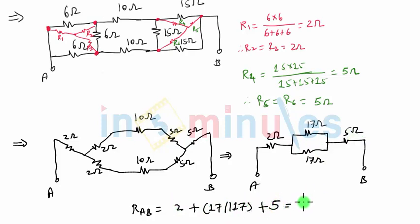This will be nothing but 5 plus 2 is 7 plus when two resistors are of equal value parallel combination will result in the value which is half. So 17 by 2 which will be nothing but 8.5. So the final answer for RAB becomes 15.5 ohms.